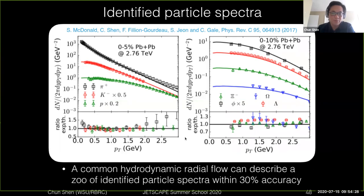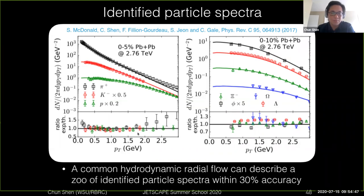The lower panel shows the ratio between the theory calculations and experiments. As you can see, for low pT below 2 GeV, the ratio remains within 30% of unity, which means the hydrodynamic description of the spectrum is really good — controlled by the blue shift of the radial flow. The hydrodynamic radial flow gives precisely the different blue shift for different species of particles according to their different mass.